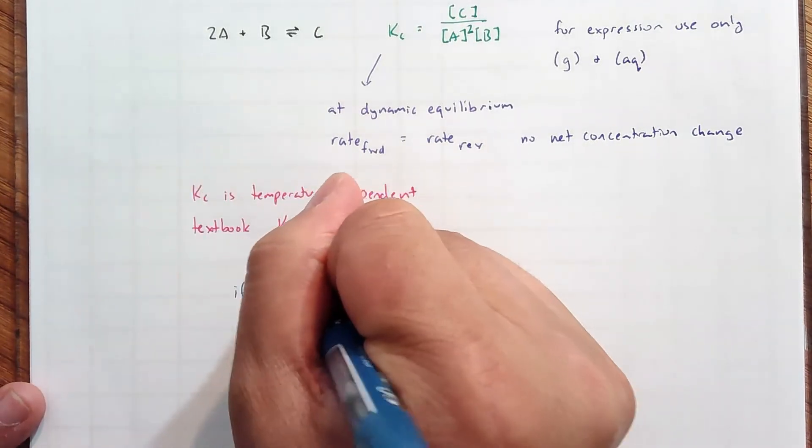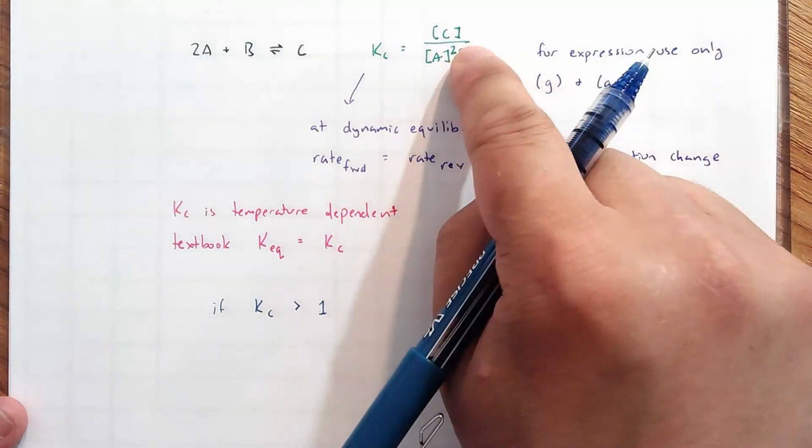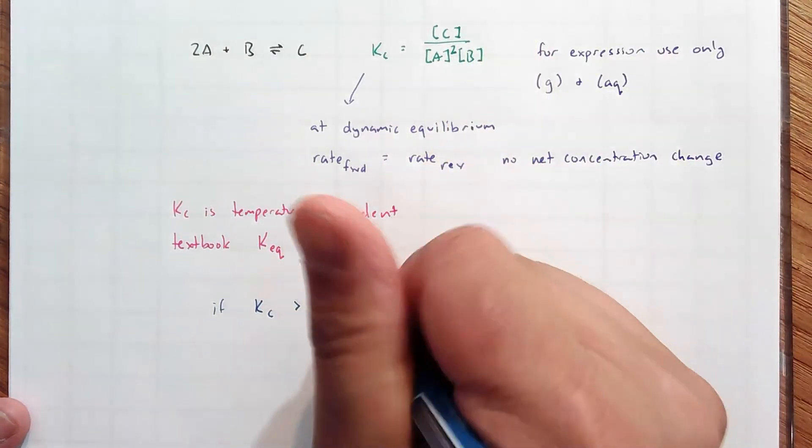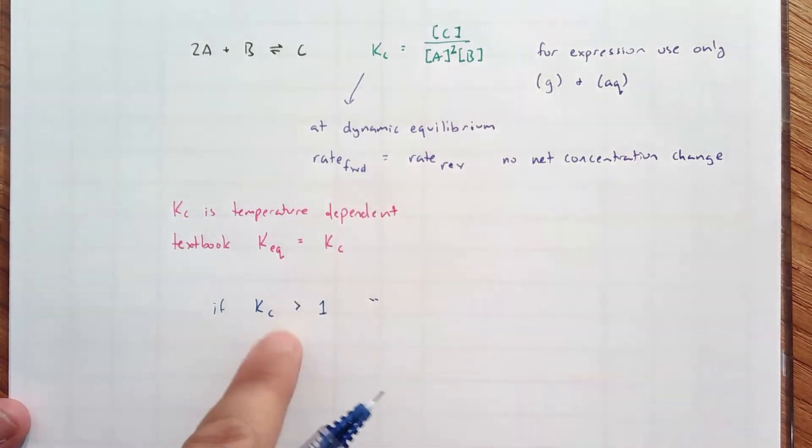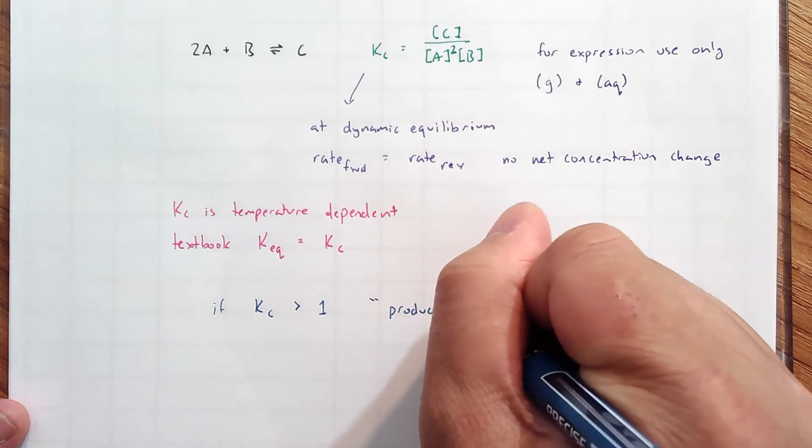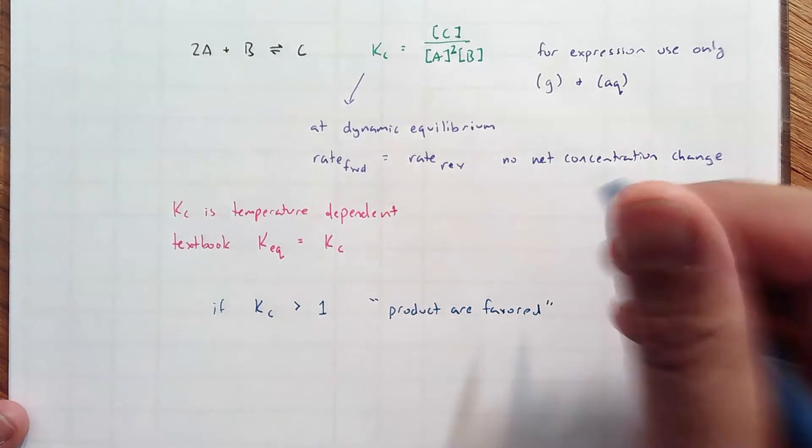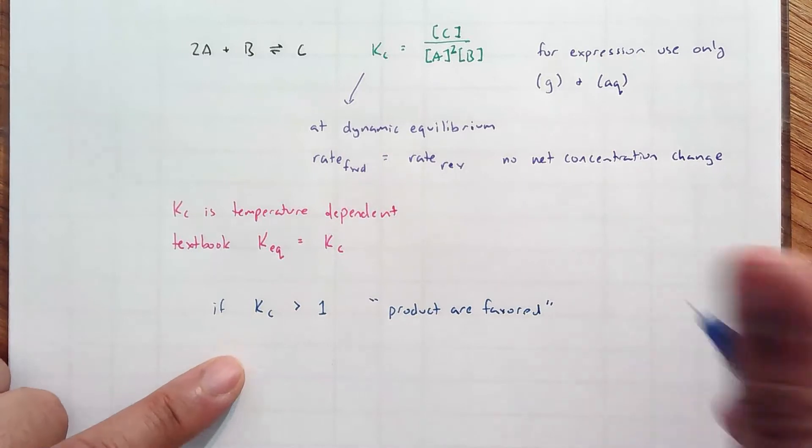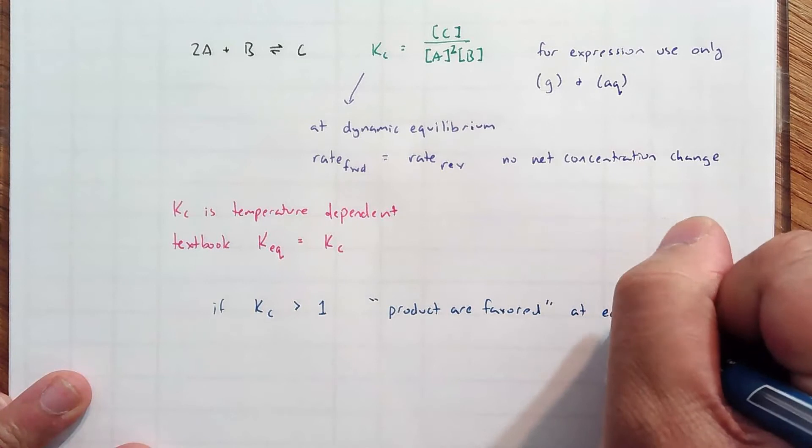Now, this is where I want to add some clarification to the terminology. If Kc is greater than 1, well, that means that their numerator is larger than the denominator. And in general, products are favored when you have the situation. You could say products are favored at equilibrium.